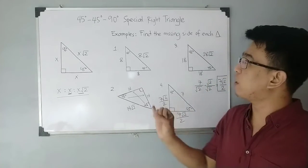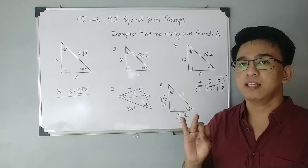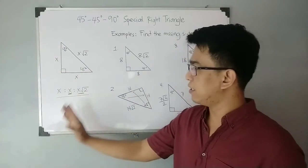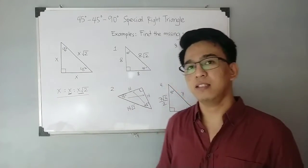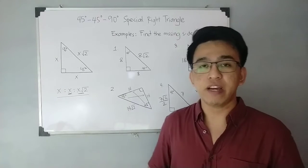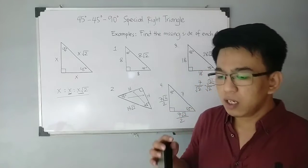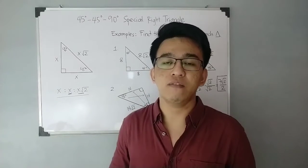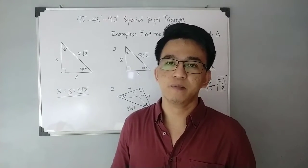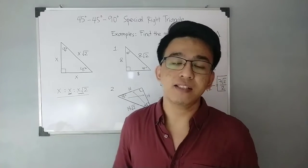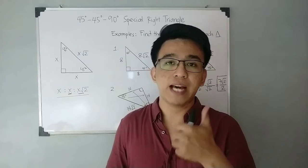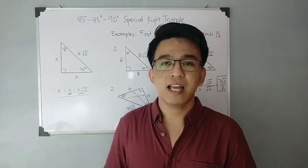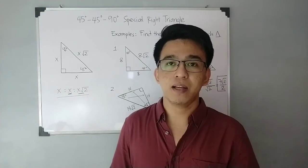I hope you learned something from this video — first, on how to derive the 45-45-90 special right triangle, and second, in finding the measurement of the missing side using the ratio x : x : x√2. In our next video we will discuss the 30-60-90 special right triangle. If you're new to my channel, don't forget to like and subscribe and hit the bell button. Again, I'm Teacher Gone — maraming salamat, bye!